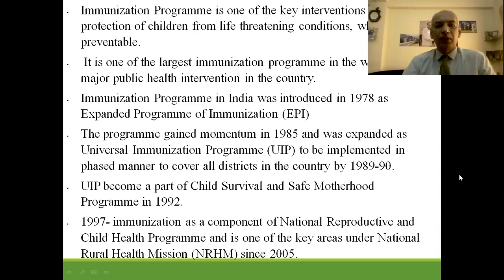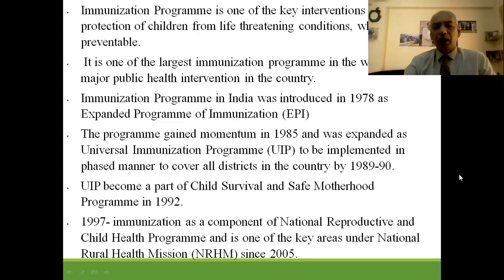Immunization program in India was introduced in 1978 as the Expanded Program of Immunization. It gained momentum in 1985 and was expanded as the Universal Immunization Program, known as UIP. It was implemented in a phased manner to cover all districts by 1989–1990. It became part of Child Survival and Safe Motherhood in 1992, and in 1997 became a component of the National Reproductive and Child Health program (NRCH), since 2005.